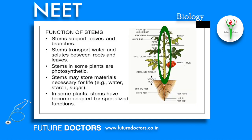Functions of Stem — Primary Functions: The stem performs various primary and secondary functions. It bears leaves, fruits, flowers, and seeds in position. It conducts water and minerals to roots, leaves, flowers, and fruits. It holds flowers in a suitable position so that pollination and fertilization can take place.